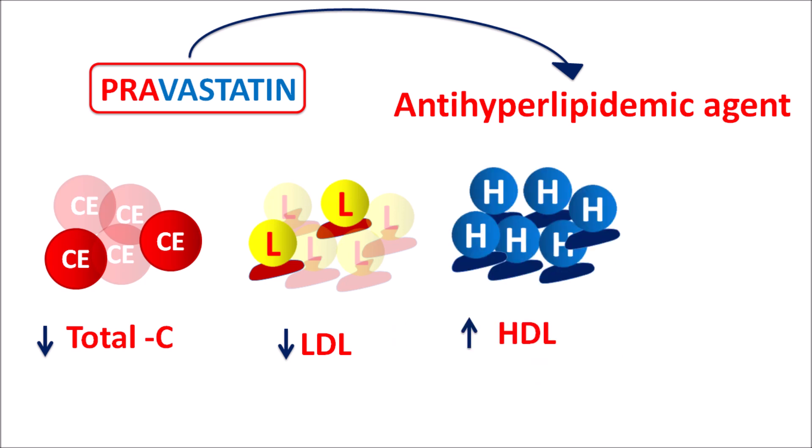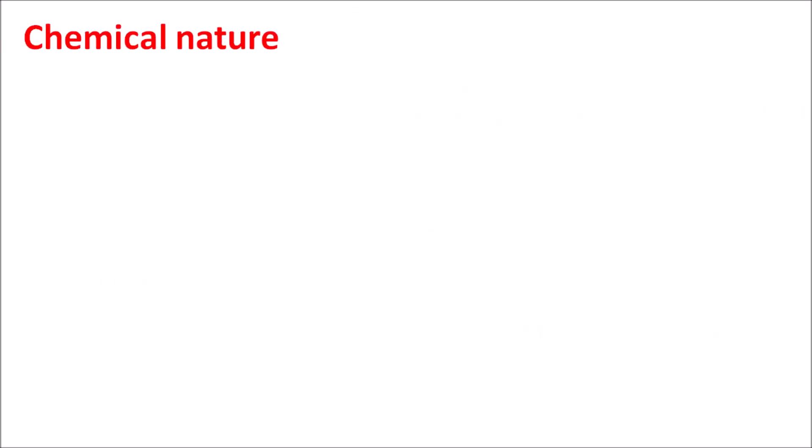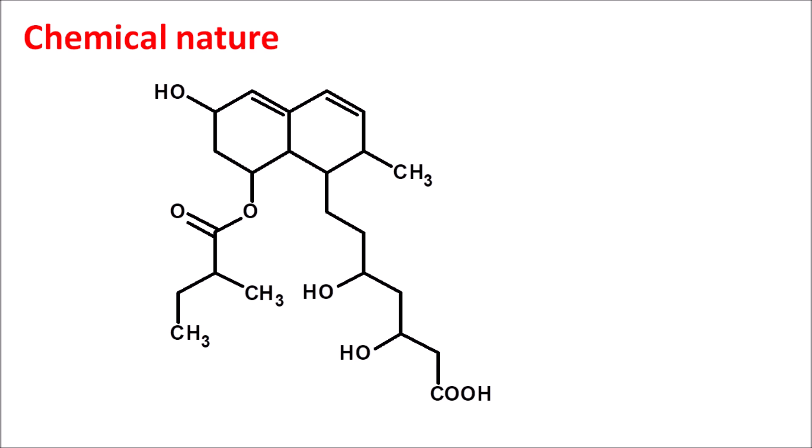LDL plays an important role in the formation of atherosclerosis, which is reduced by pravastatin. Similarly, this drug can also increase the levels of HDL cholesterol, considered good cholesterol, which is released from tissue and reduces the formation of atherosclerosis. Finally, pravastatin can also reduce triglyceride levels, along with reducing apoB factor, which increases the risk of atherosclerosis.